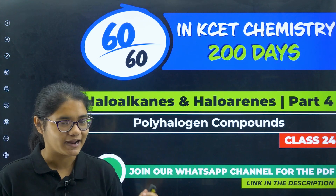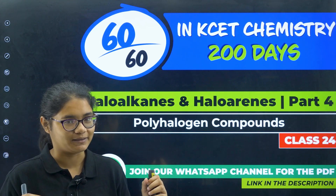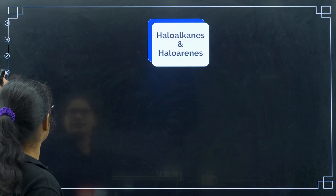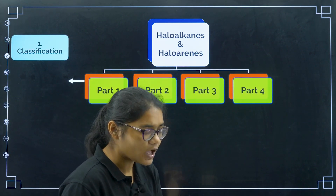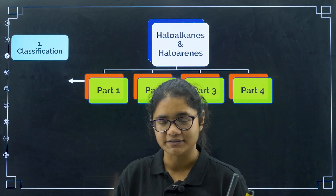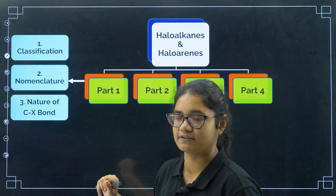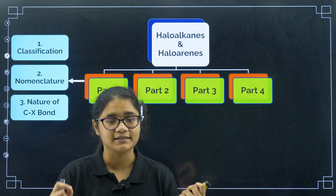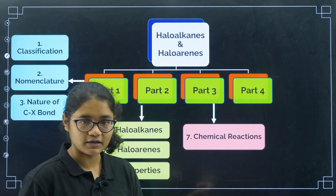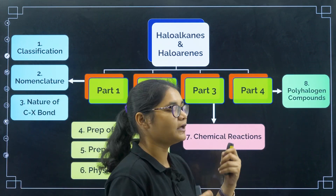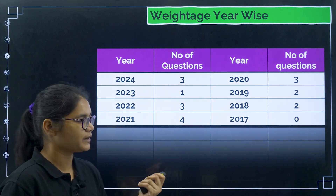Champions, let us now get ready. I want everyone to sit with a notebook and note down all the important things and practice questions with me. We have covered this chapter in four parts. When you revise, remember: first revise classification, nomenclature, and the nature of the C–X bond; second, preparation of haloalkanes, haloarenes, and physical properties; third, chemical reactions; and lastly, just overlook the polyhalogen compounds. Moving to yearwise weightage, you can expect almost three to four questions every year.